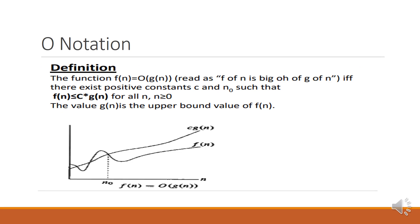Coming to Big O notation: f(n) = O(g(n)), read as 'Big O of g of n', if and only if there exist positive constants c and n₀ such that f(n) ≤ c · g(n) for all n ≥ n₀.